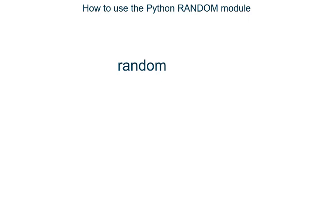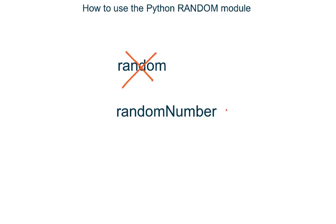A final important point to note is that when you make programs that use the random module, it is really important NOT to save your program with the file name random or it won't work properly. The file name can include the word random but cannot only be called random.